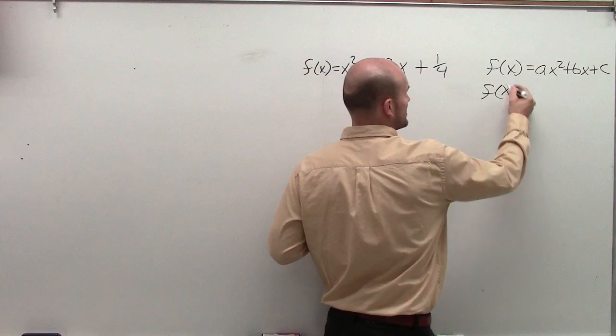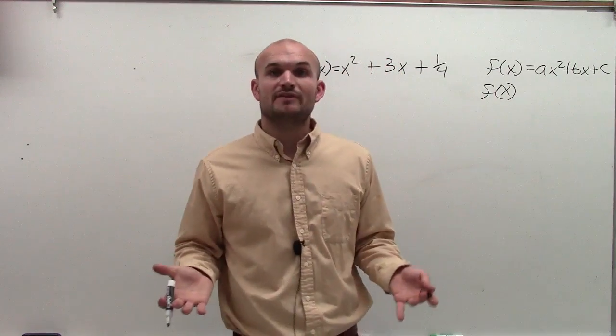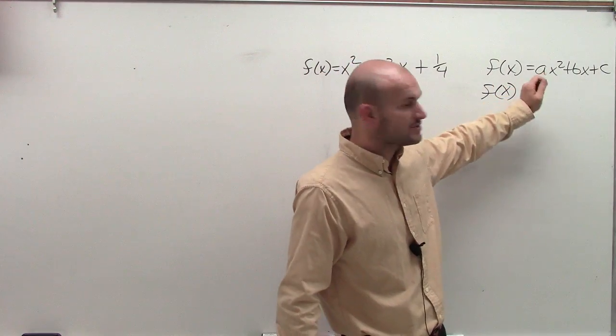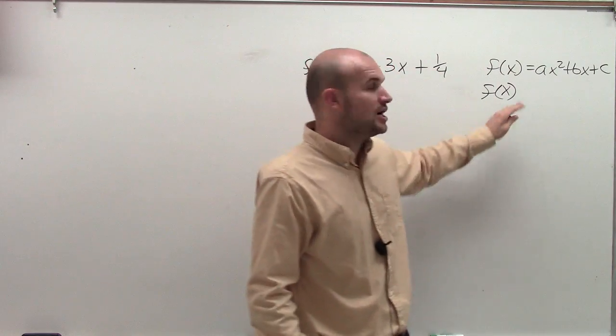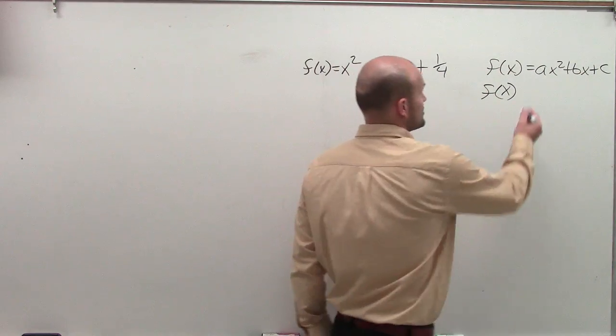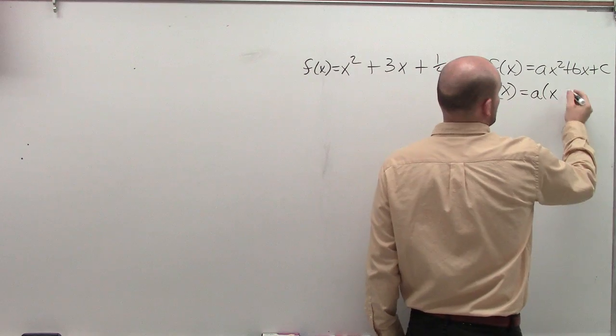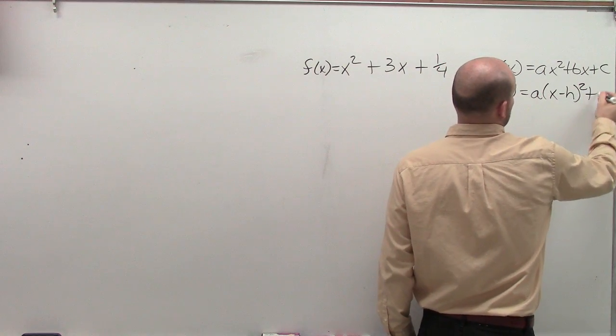So what I was writing up here before I started the video was the definition of a quadratic, which is f of x equals ax squared plus bx plus c, and then also the standard form of a quadratic, which is a times x minus h squared plus k.